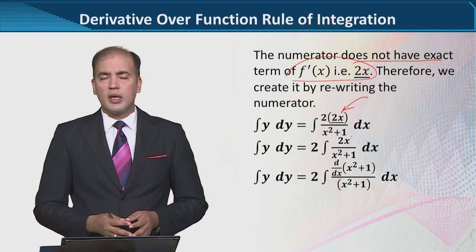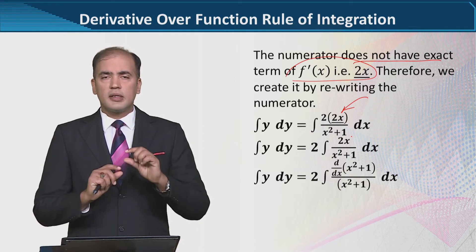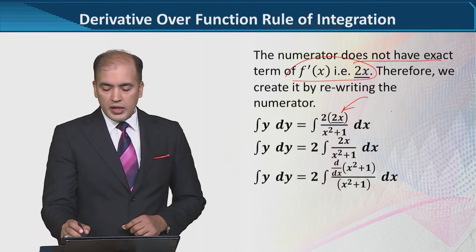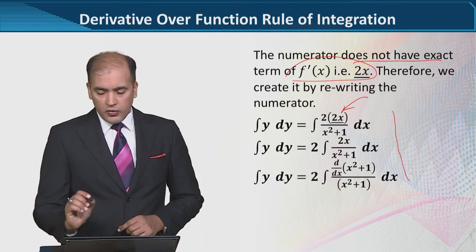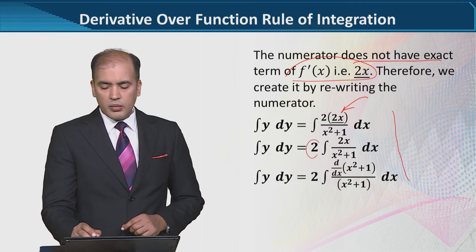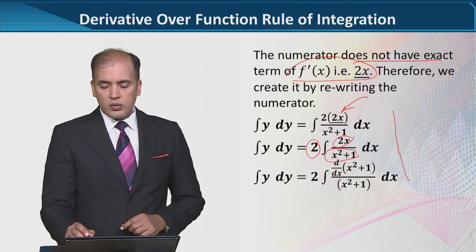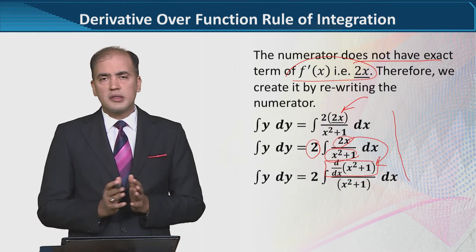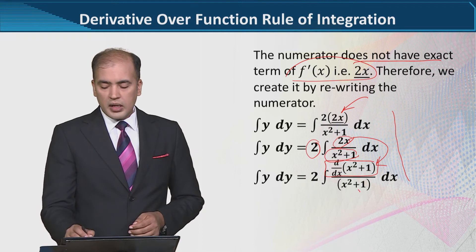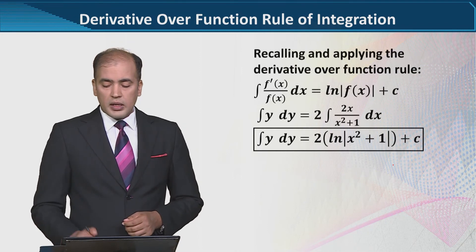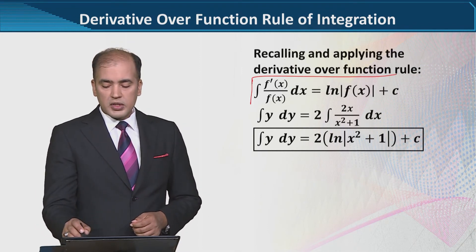But here what we need to understand is that we need to generate the function and its derivative in the numerator. So we did this simple mathematics, all the steps of which I've performed for you here. We broke down 4x, wrote 2x outside, and we know 2x is the derivative of the denominator. I've written 2x symbolically so that you know what it actually is—2x is basically the derivative of x²+1.